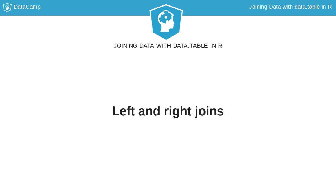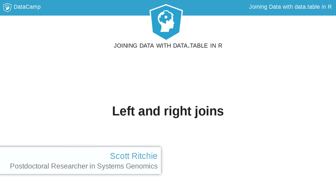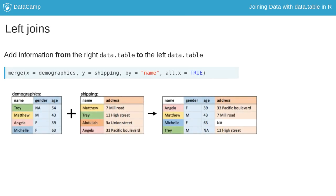There are two more joins you can perform using the merge function, left joins and right joins. A left join keeps only the observations that are present in the data table on the left side of the join.